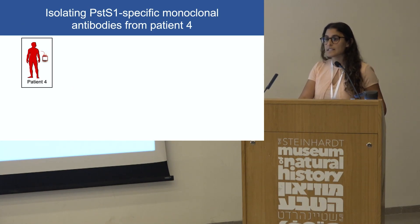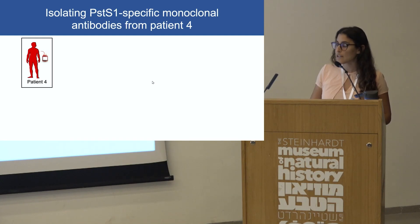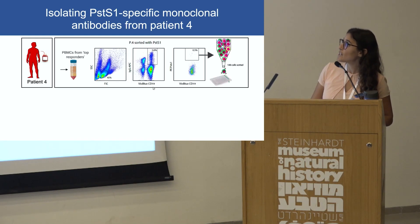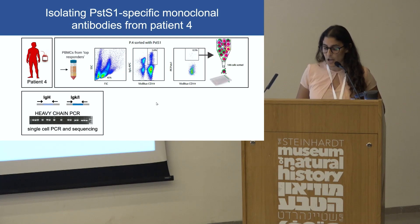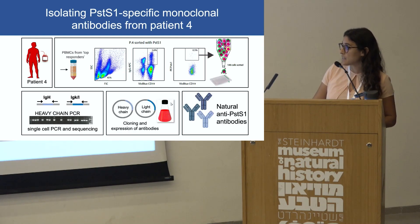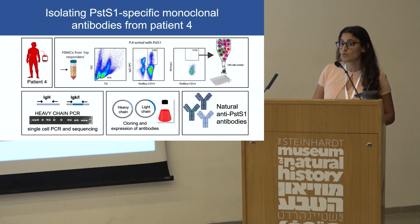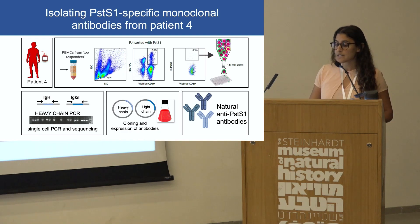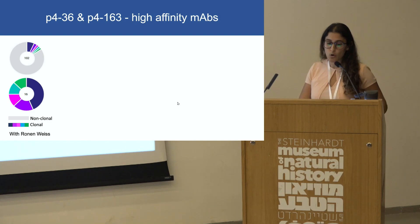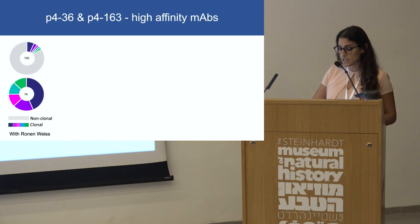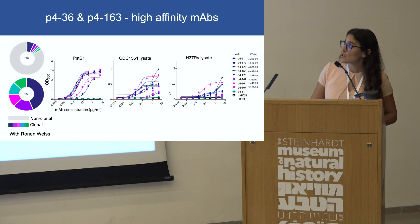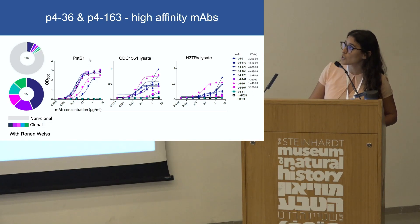To further characterize the antibodies targeting PSTS1, we obtained a large blood donation from patient 4 and single-cell sorted all the memory B cells specific to PSTS1. Then we amplified the heavy and light chain of each antibody, cloned them, and produced them in mammalian cells. At the end of this process, we produced anti-PSTS1 antibodies similar to those produced by the patient. Overall, we managed to amplify 16 clonal heavy chain sequences and produced nine antibodies, eight of which bound very strongly to PSTS1 in ELISA.